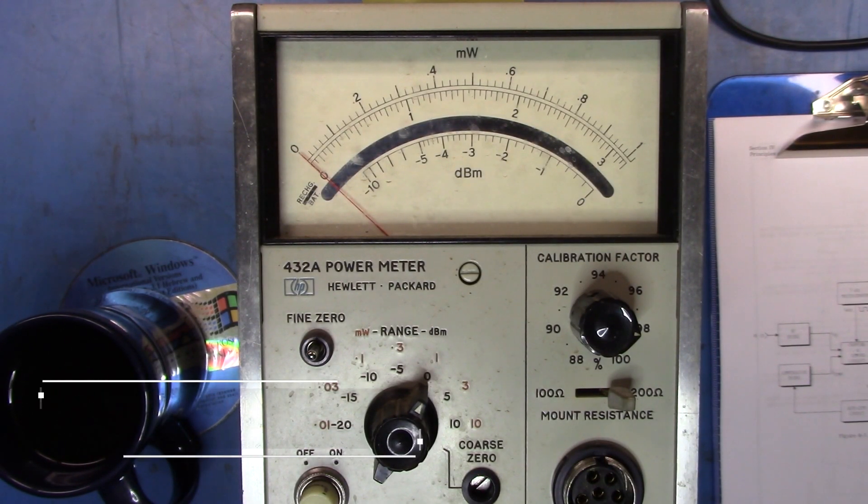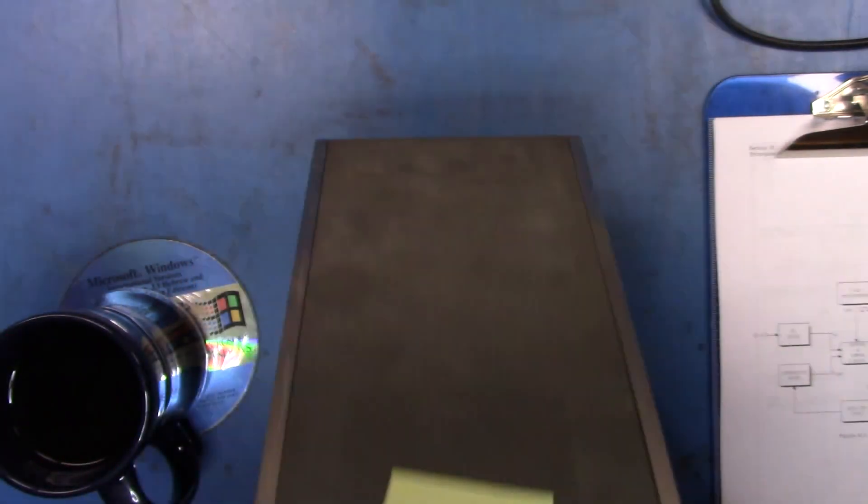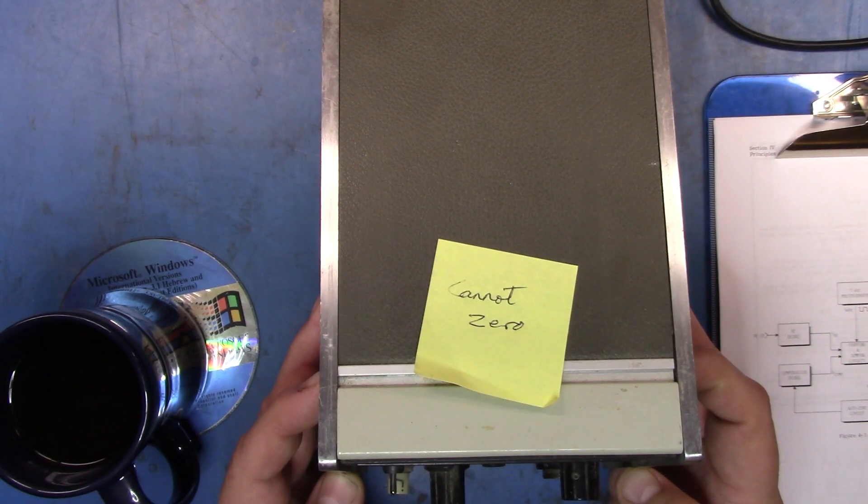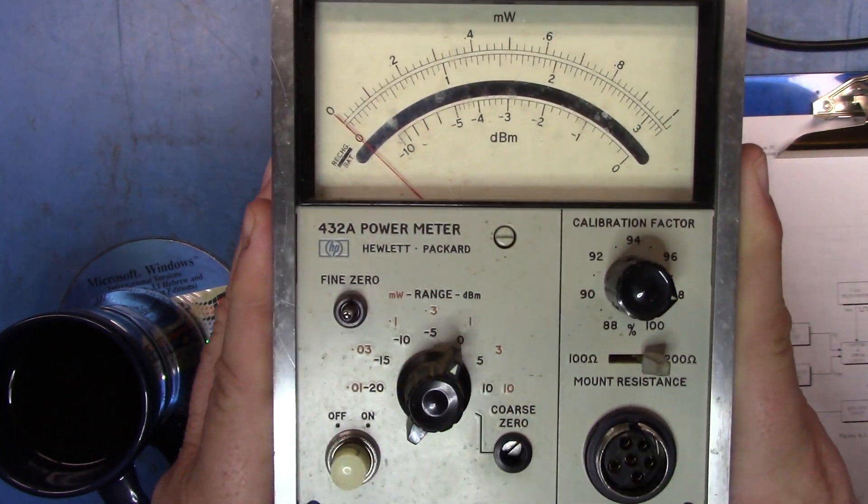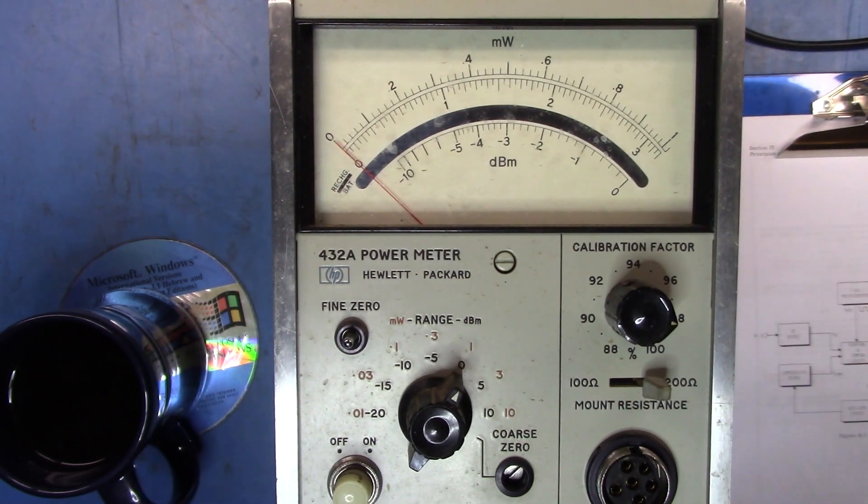What we have here today is a classic 432A power meter, and this one apparently cannot zero. So I have some spare part units.